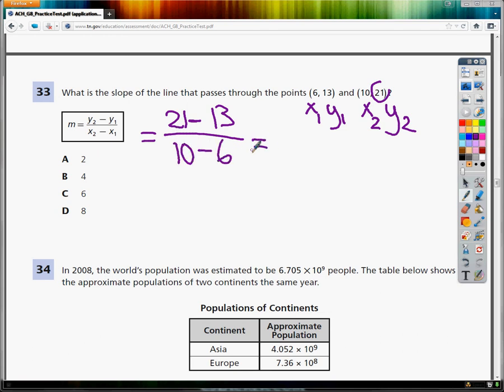So you can either do 21 minus 13, enter, divide by thing. You can put it in as a fraction if you would like, which is what I'm going to be doing because I tend to like putting things in as fractions. It gives me a nice, simple, and organized answer. And your final answer will be 2.